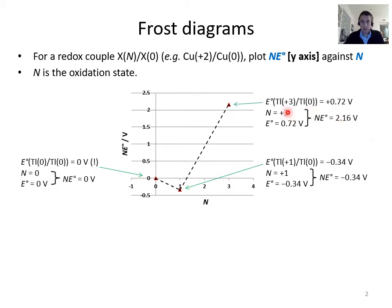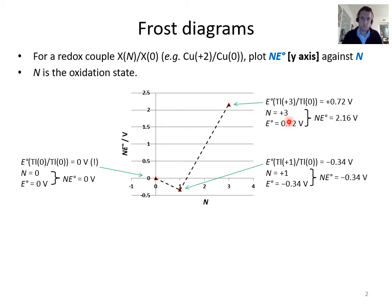Finally, for tantalum +3 back to 0, the standard reduction potential is +0.72 V. Therefore 0.72 × 3 = +2.16, so this point appears at y = +2.16 V on the diagram. You can see how the diagram is built up, and given some data you could do this yourself quite easily.